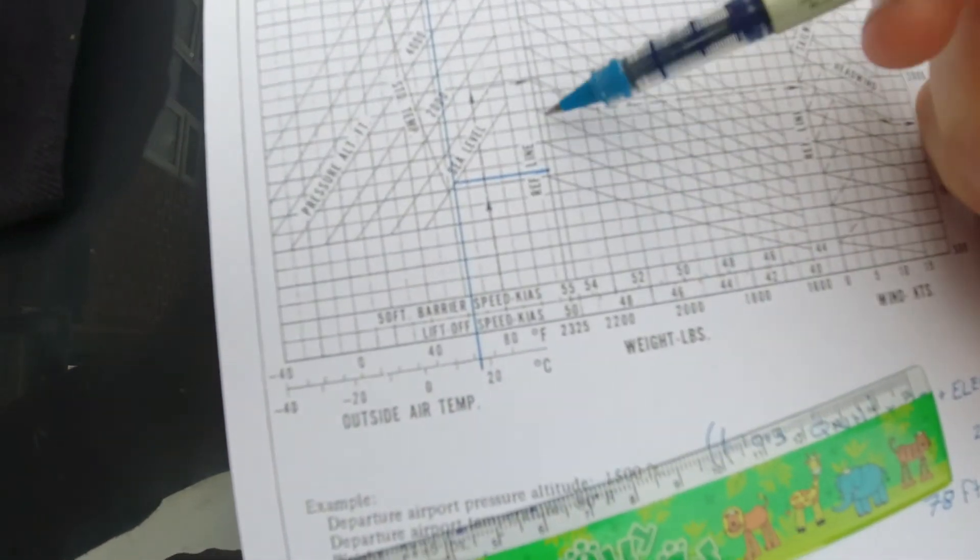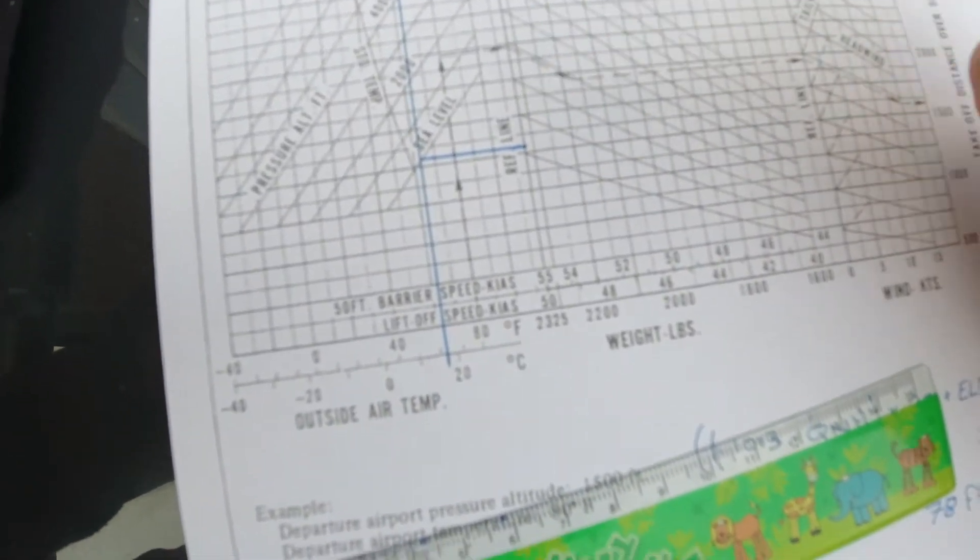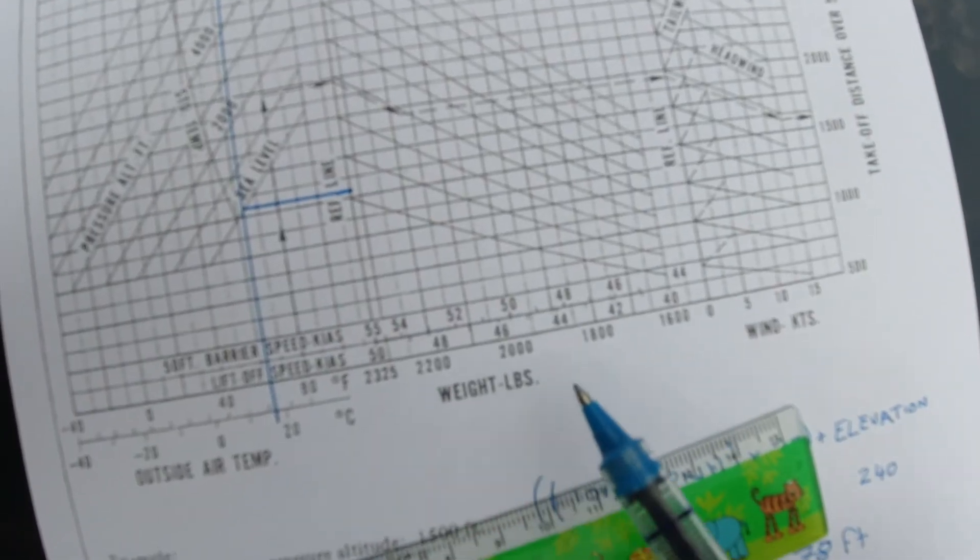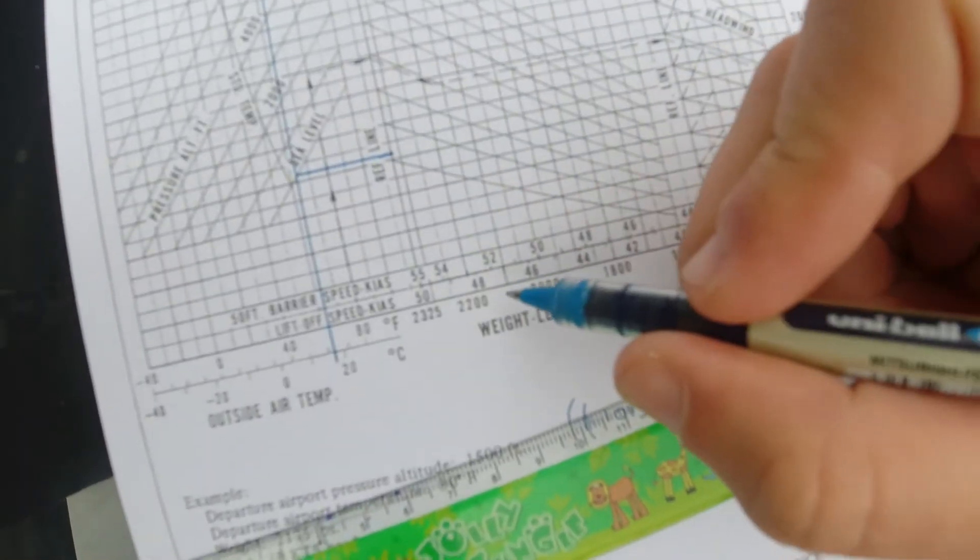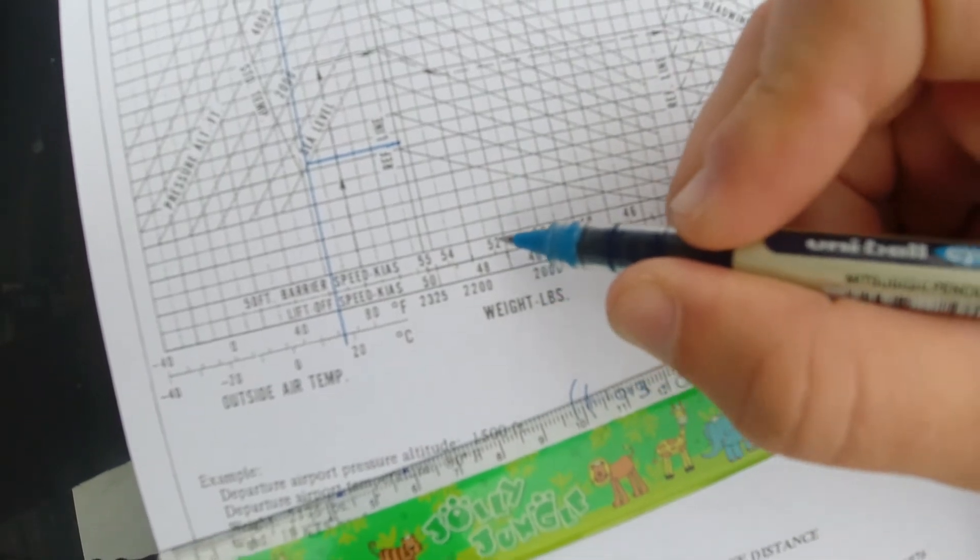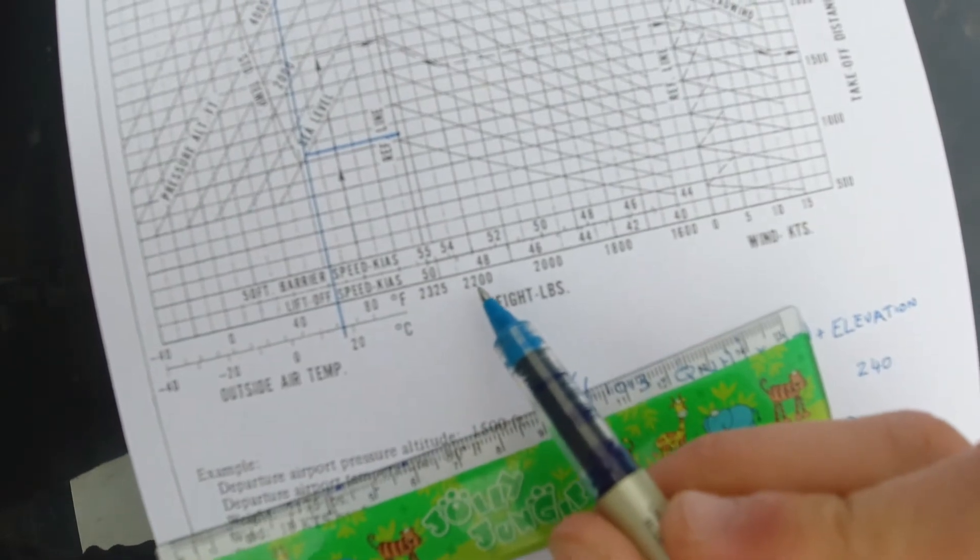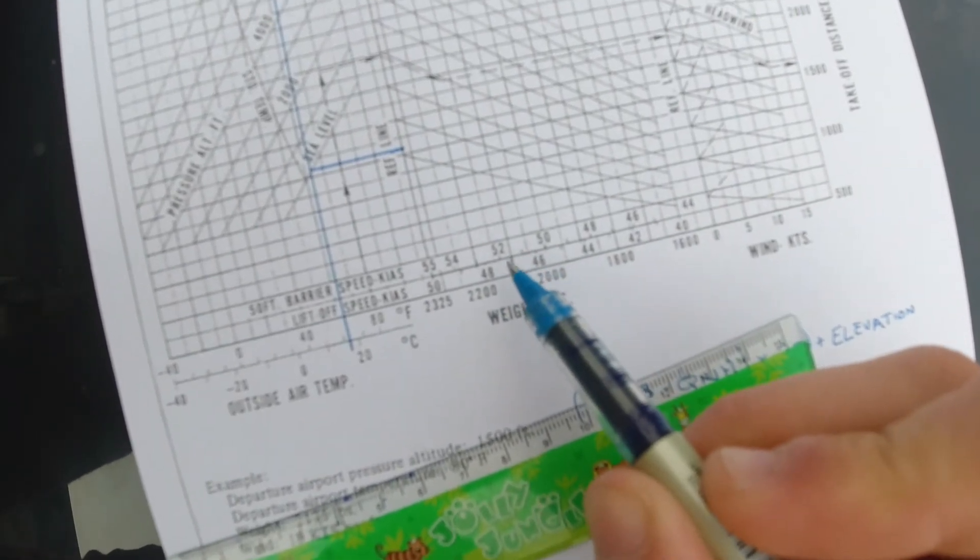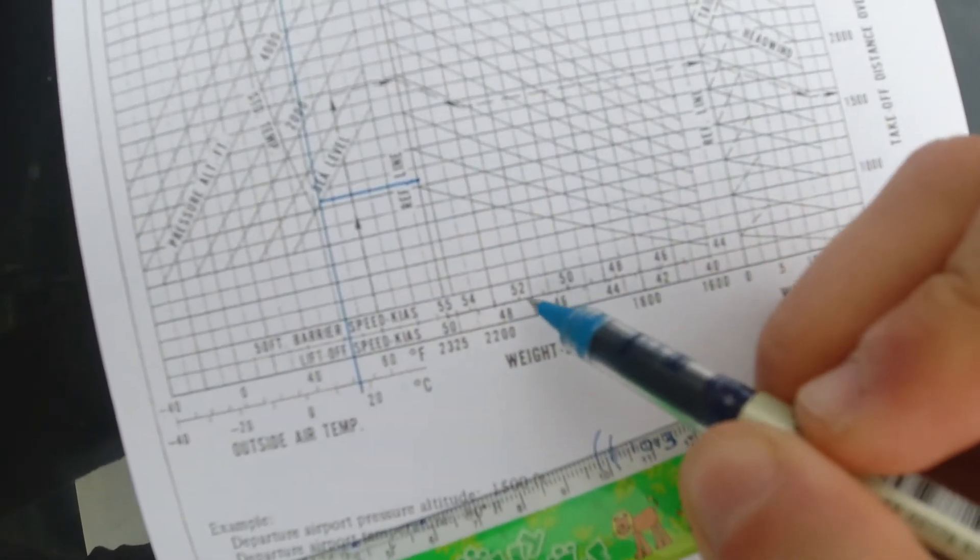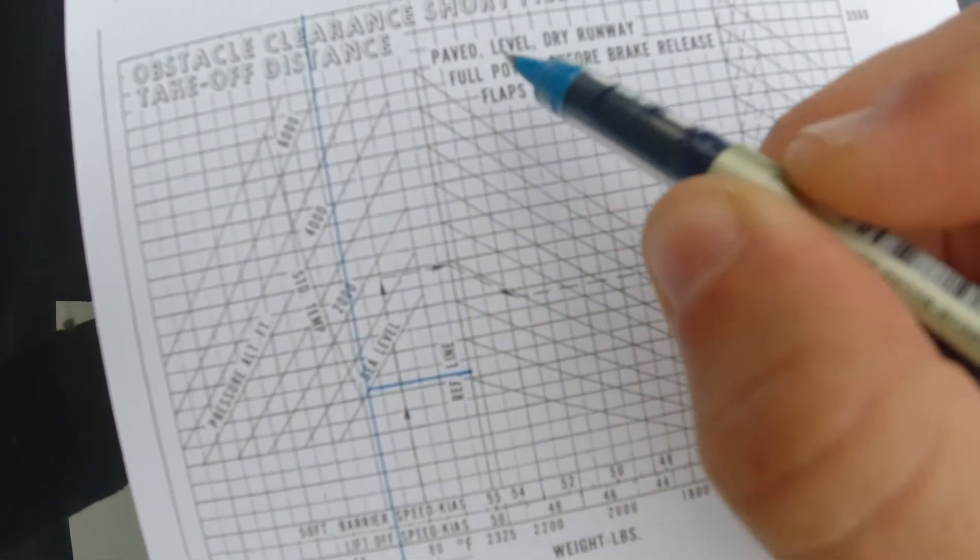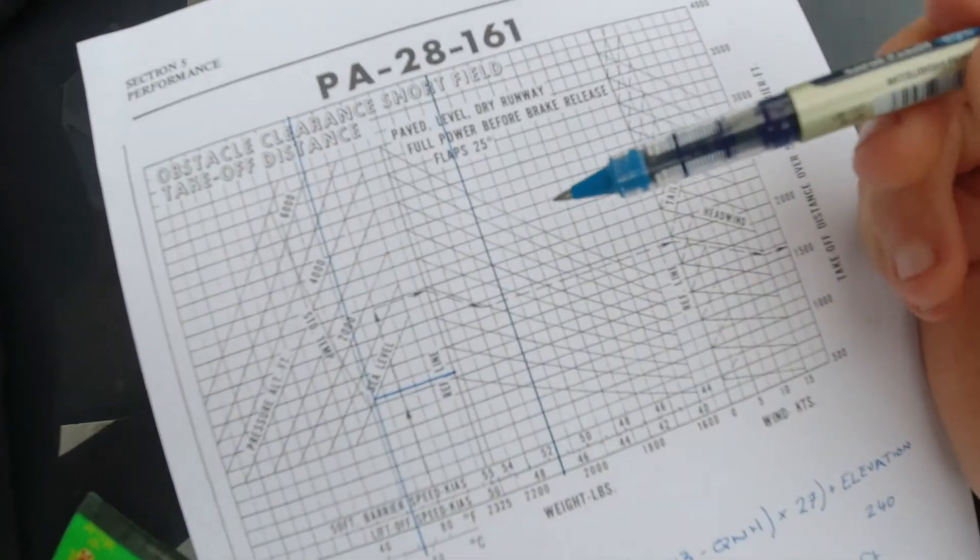I've now added that second line that takes us to the reference line, and the next thing I want to consider now is on the bottom here, the weight. This is assuming you've run a mass and balance, so I'm going to choose 2,100 pounds, which is a reasonably average takeoff weight for a PA28. There's 2,000, there's 2,200, so halfway between them will be 2,100 pounds, and I'm simply once more going to take that line and draw it vertically all the way up to the top of the graph.